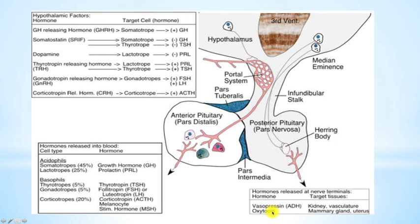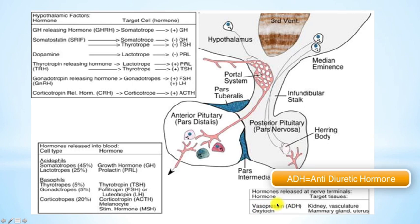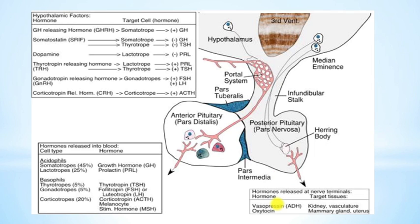Oxytocin is important in uterine contraction to facilitate labor, and mammary gland contraction to facilitate lactation. The other hormone is ADH, also known as vasopressin, and this hormone is important for water reabsorption from the collecting tubules in the kidney.